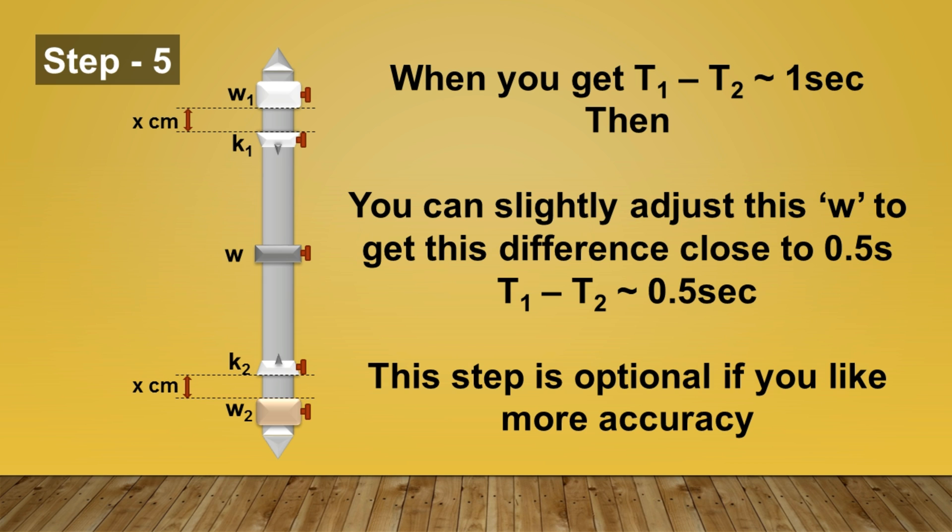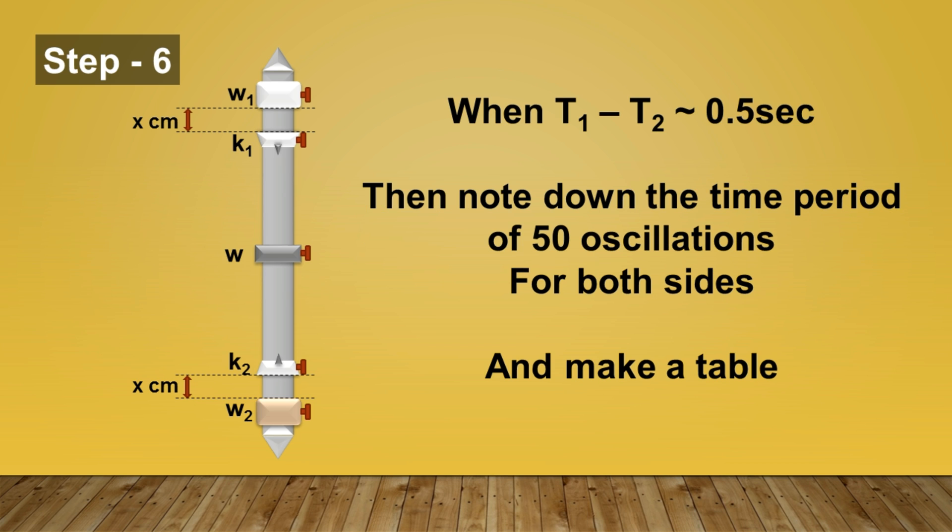Finally, you will reach to a state where the time difference between T1 and T2 is around 1 second. Now you can slightly adjust this ring W to get this difference close to 0.5 second. This step is optional. The lower value of this time difference will increase the accuracy of this measurement. Now when you have achieved the arrangement in which the time difference is half a second.